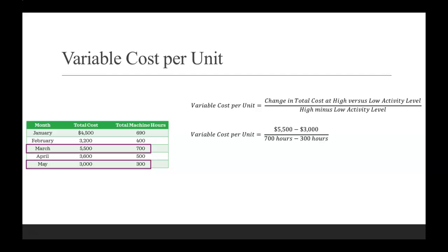So dollars will be up in the numerator, that's our $5,500 minus $3,000. Those are our cost amounts from March and May. We divide that by 700 hours minus 300 hours.